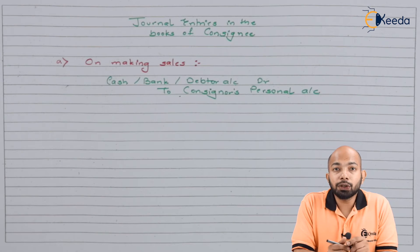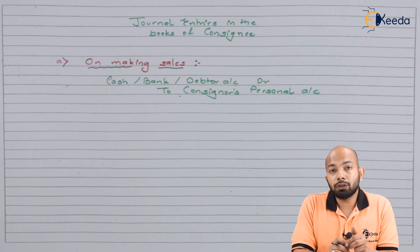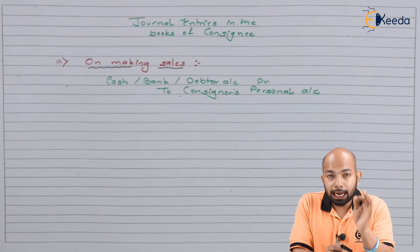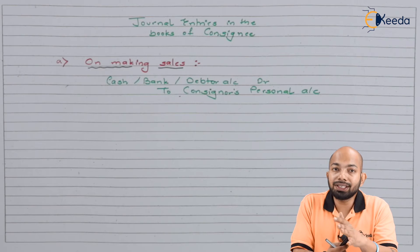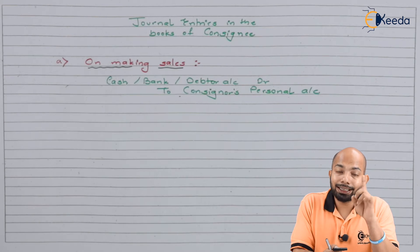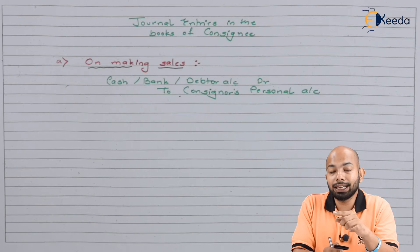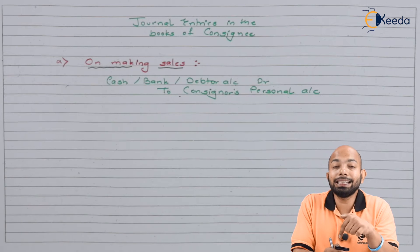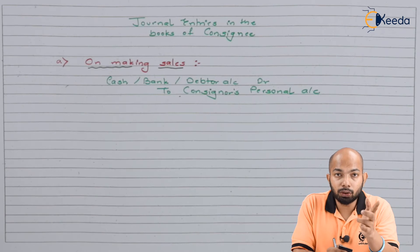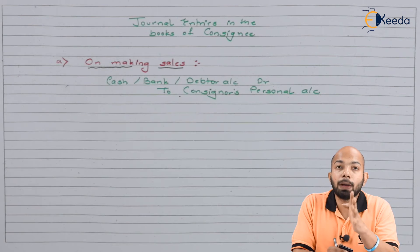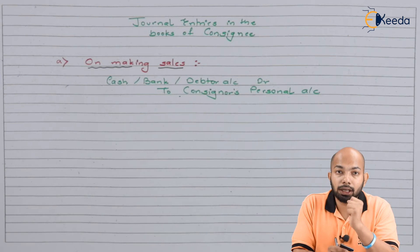The first entry refers to the journal entry when sales happen. In the books of the consignee, the entry will be either cash account debit, bank account debit, or debtor account debit — to the consignor's personal account. If you remember, in the consignor's account we used to mention consignee's personal account; similarly, in the consignee's journal transactions we will mention consignor's personal account.